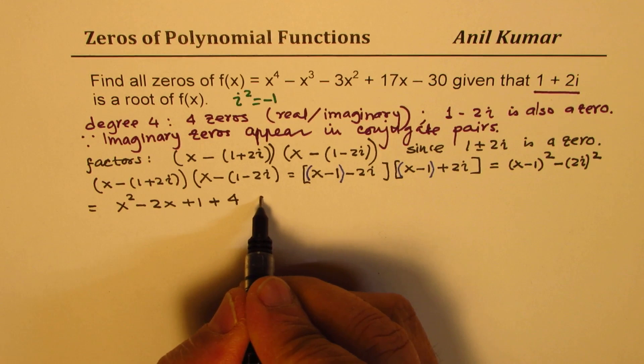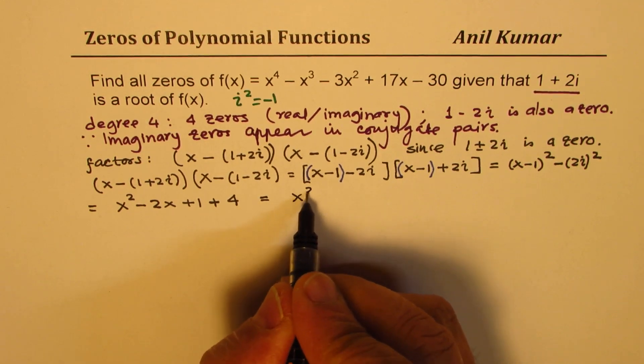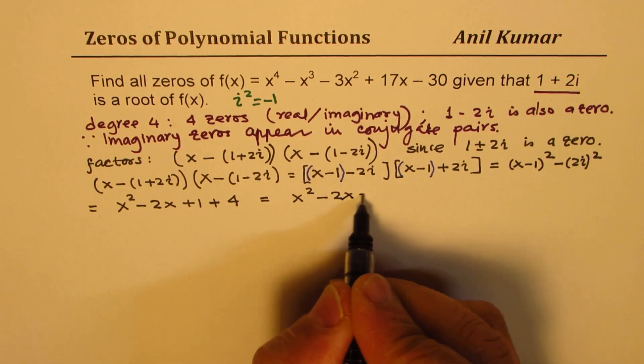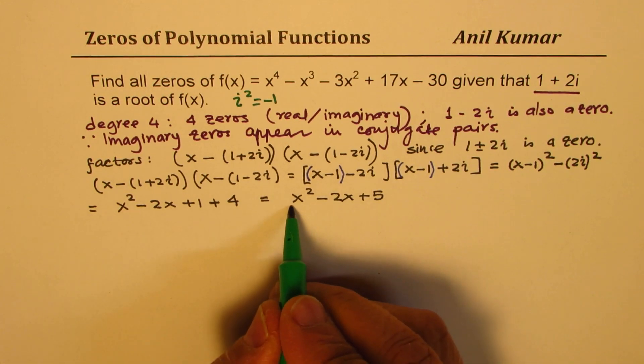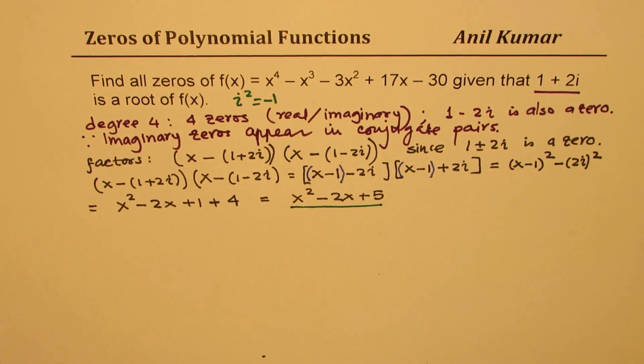It's an imaginary number. So that gives you one factor, which is x^2 - 2x + 5. We now know that this is also a factor of the given function f(x). Perfect. Knowing this factor helps us to find the other factors.